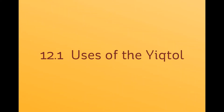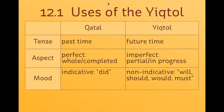Let's begin by looking at the uses of the yiktol. For every verb that you have memorized, you have on the flashcard the katal form and a yiktol form — specifically, the third-person masculine singular katal and yiktol forms. I've told you that you can think of the top flashcard form as the 'he-did-it' form, and the bottom form as the 'he-will-do-it' form. That's a bit of a simplistic view.